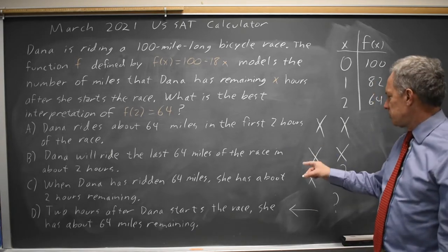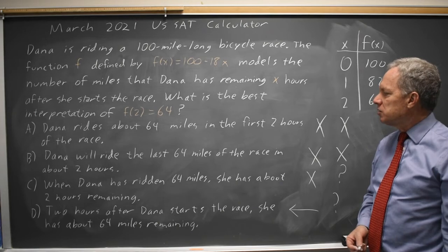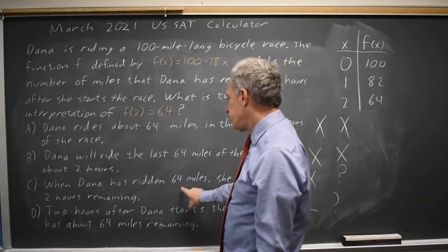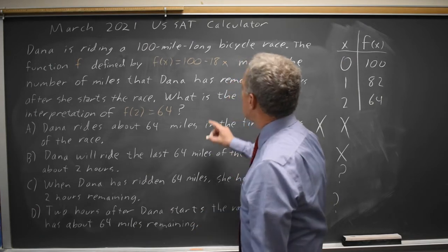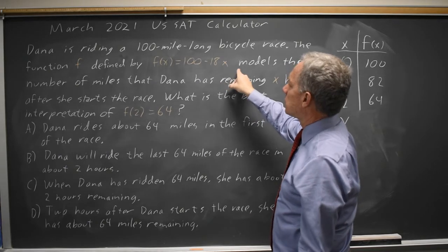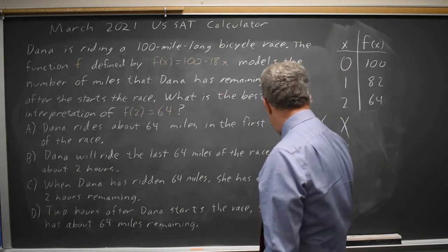If you're still unsure, you can go with a 50-50 guess. Or you can now reread it, where choice C is talking about miles ridden, and choice D is talking about miles remaining. And we see that the function F models number of miles remaining, so that is choice D.